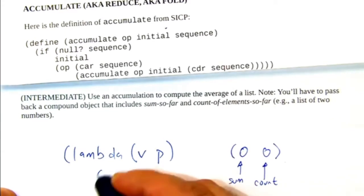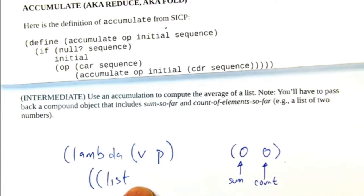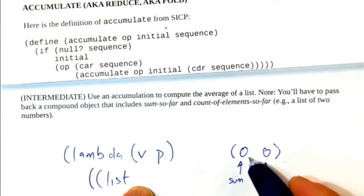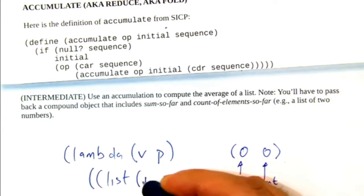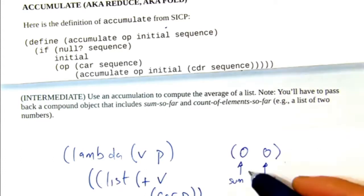It's going to make a new list. The first item in the list is the result of adding V, which is the number we're receiving, to the prior sum. So we're going to add together V and car of P. Remember, this thing got named P when our function kicked off. That becomes the new sum in the position of a new list.